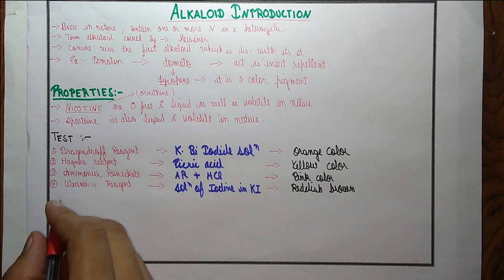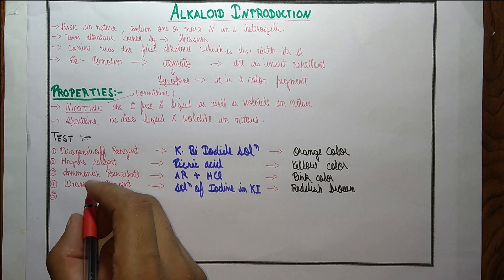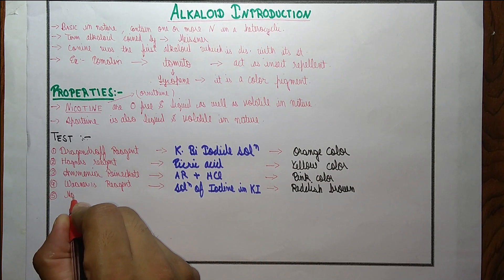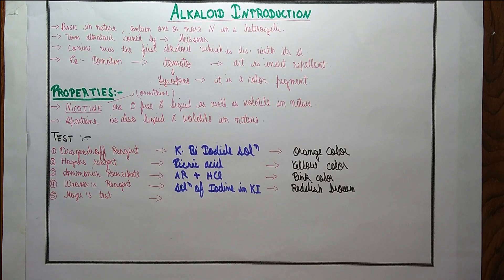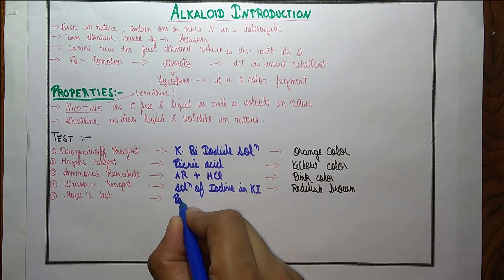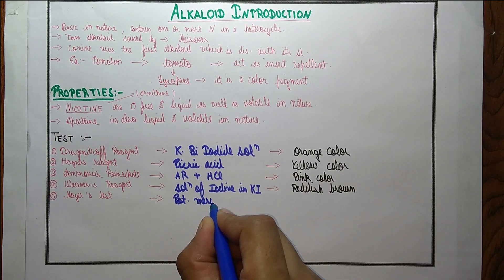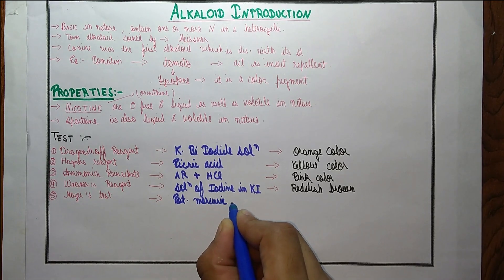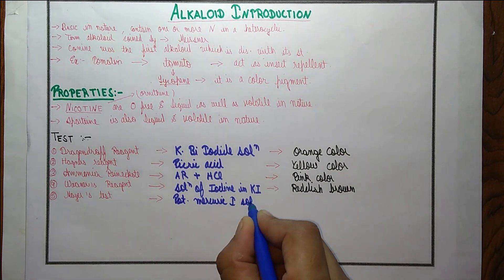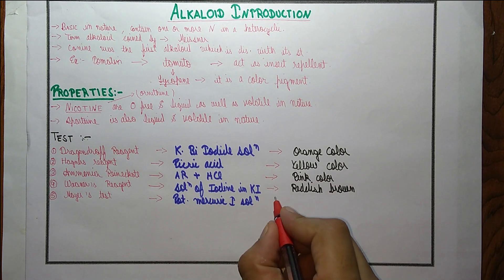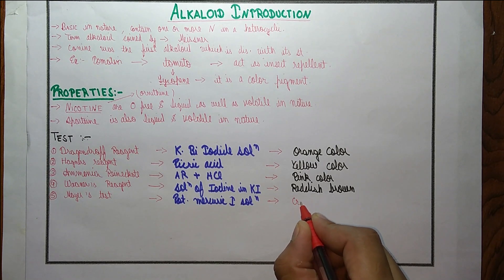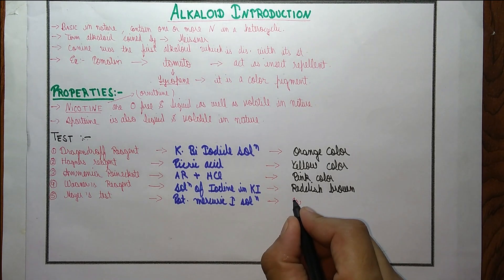Next test is Mayer's reagent. The reagent used is potassium mercuric iodide solution, and it will produce a crimson color.